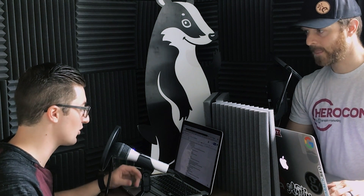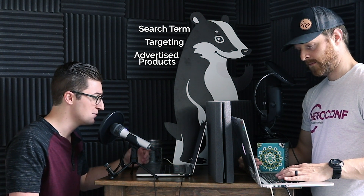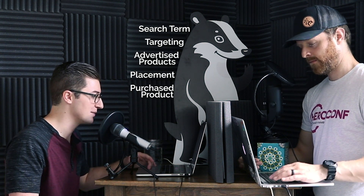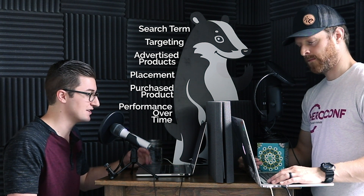We're going to be talking about the six kinds of sponsored products reports that you can get from the back end of your advertising reports, and we're going to talk about some strategies and how to get the most value out of them. This is going to be fairly intermediate level content, really talking about how to take these reports and use them.